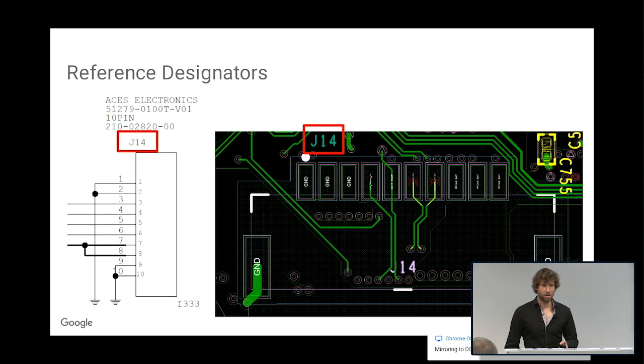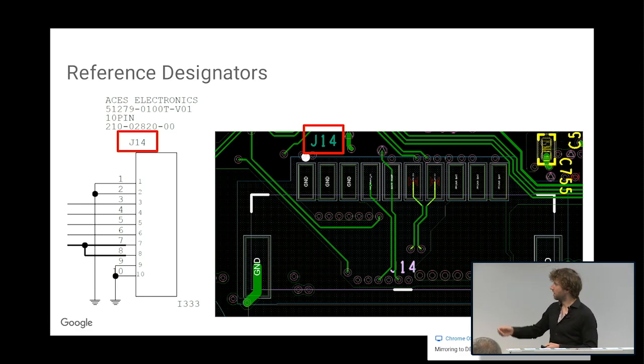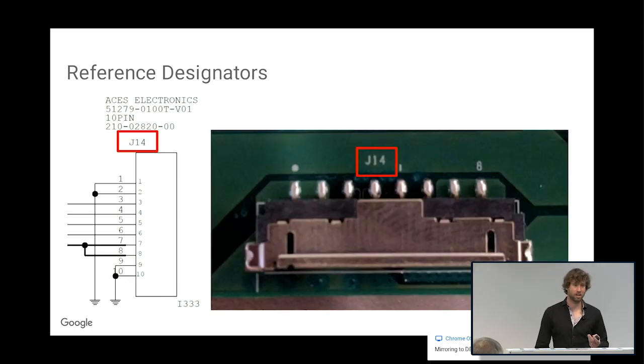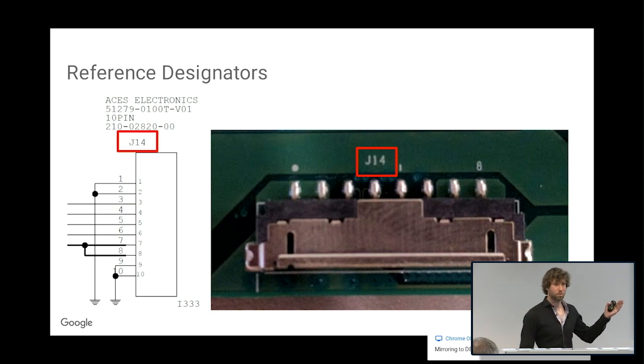We have this thing, the J14, called a reference designator. There are so many parts on these designs, we have to be able to track each individual one from the schematic all the way to the real manifestation of itself. J14 has its place on the printed circuit board, and in real life if you were to take a picture of the connector, you would see where J14 is. As you're tracing problems, you have to use these reference designators to find out where you need to look on the board.